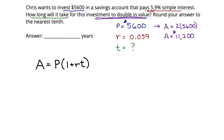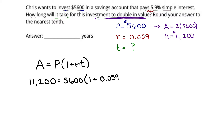Let's fill in the information that we're given, substituting each letter with the value we've written down. A gets replaced with $11,200. P gets replaced with $5,600. R gets replaced with 0.059. And T — that's what we don't know. So what we have now, instead of a formula, is an equation: $11,200 equals $5,600 times the quantity 1 plus 0.059T.